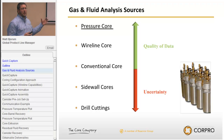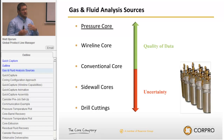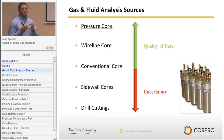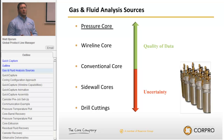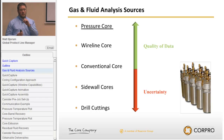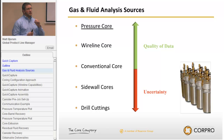Looking at a spectrum of methods: drill cuttings are a continuous effort during the drilling and coring process — you collect fine-grained material for analysis. Moving up the spectrum, sidewall cores — percussion or rotary — have a very small surface area, which limits the amount of analysis you can do on those cores.